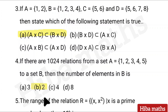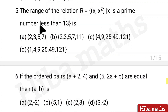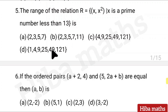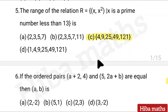Answer: option B. Fifth question: The range of the relation R is equal to {(x, x²) : x is a prime number less than 13}. We have 4 options. Answer: option C.